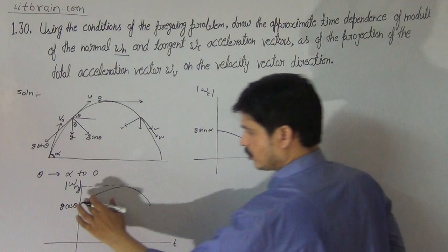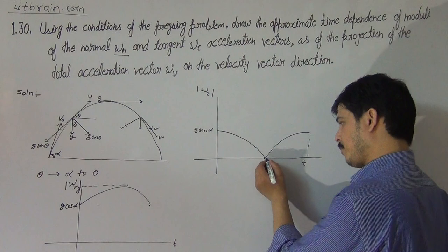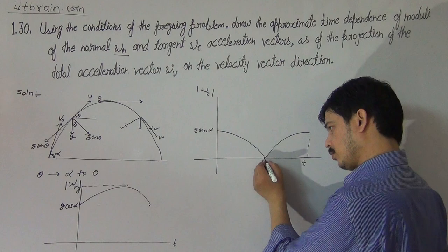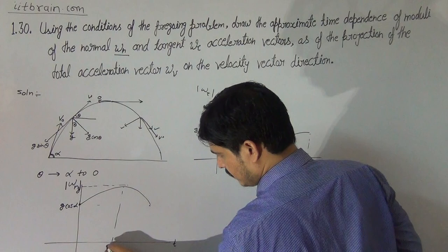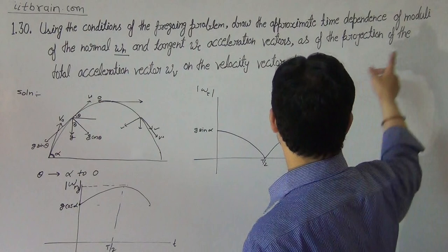So the tangential acceleration graph starts at g·sin(alpha), decreases to zero at the halfway point (half time of flight), and then increases back to g·sin(alpha) at the end. This gives a U-shaped or V-shaped curve symmetric about the midpoint of the time of flight.